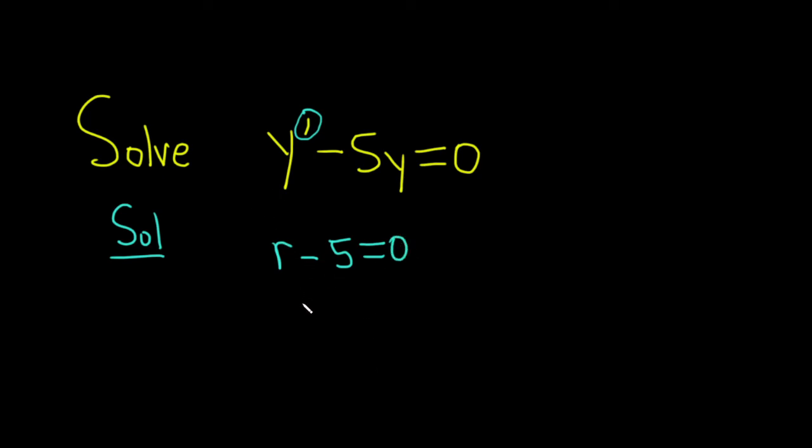So here we get r equals 5, and so that's the solution to this characteristic or auxiliary equation. And because we have a single real root, the answer is of the form y equals ce to the rx, where r is the root. So in this case it's y equals ce to the 5x.